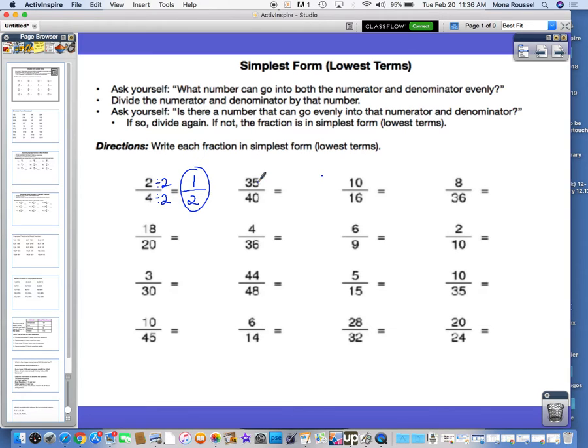We go to the next fraction, 35 over 40. We can think of some of the factors of 35 to help us decide what might be able to also go into 40. So we know in 35, 7 times 5 is 35, but 7 can't go into 40. But the other factor, 5, can go into 40. So we can divide both the numerator and denominator by 5. 5 goes into 35 seven times, and 5 goes into 40 eight times.